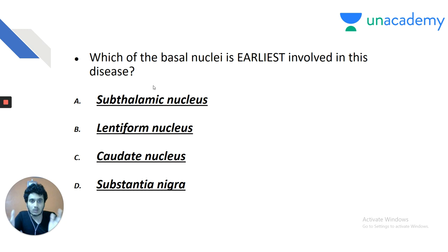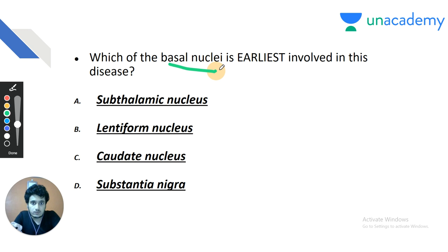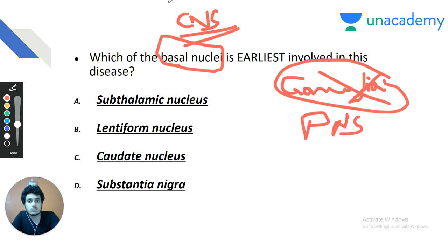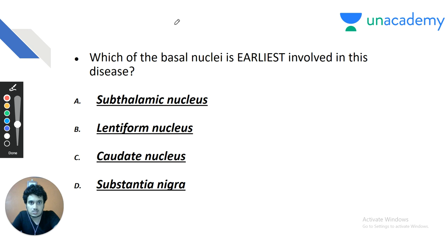You cannot just memorize facts to answer such integrated questions. Also note: the more appropriate term is basal nuclei, not basal ganglia — ganglia refers to neuronal cell bodies in the peripheral nervous system, whereas these structures are in the CNS (brain). If the term basal nuclei is given as an option, prefer it over basal ganglia.